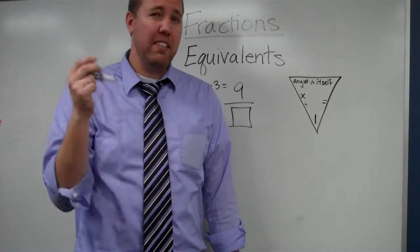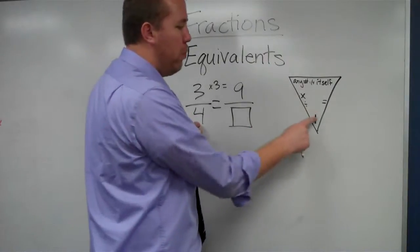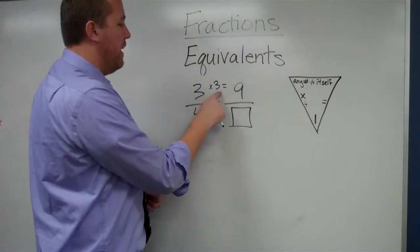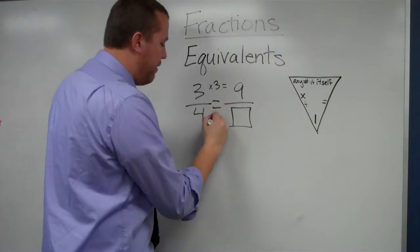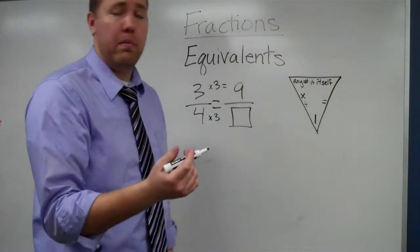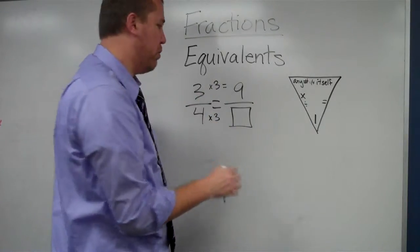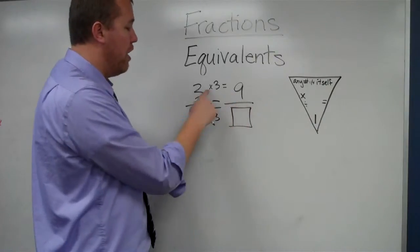Now, if I remember that I need to keep this equal, then I am timesing 3 fourths by one whole to equal itself. Then if I times the top by 3, I have to times the bottom by the exact same thing. This way, I am timesing this fraction, 3 fourths, by 3 over 3, which equals 1. So I times the top to get what I know.